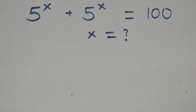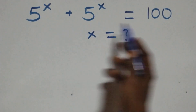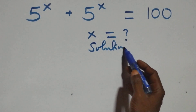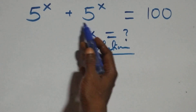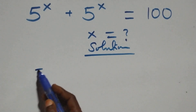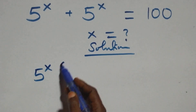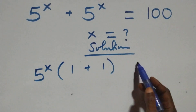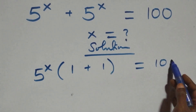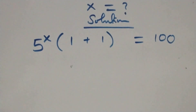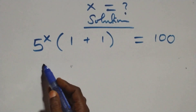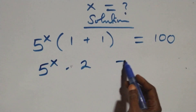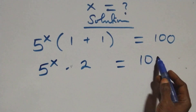Hello, you're welcome. How to solve this nice exponential equation. We factor 5 raised to power x here — into brackets we are left with 1 plus 1, then equals to the right-hand side. So we have 5 raised to power x times 1 plus 1, that's 2, equals to the right-hand side.